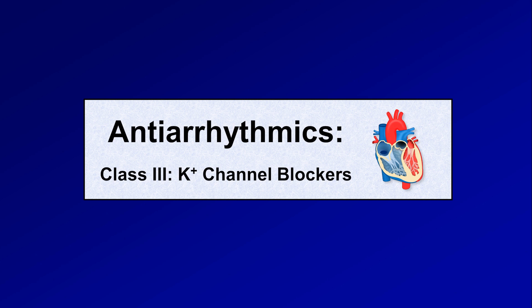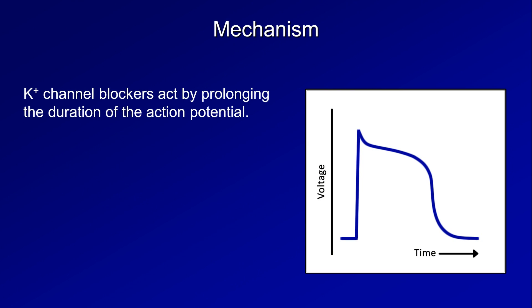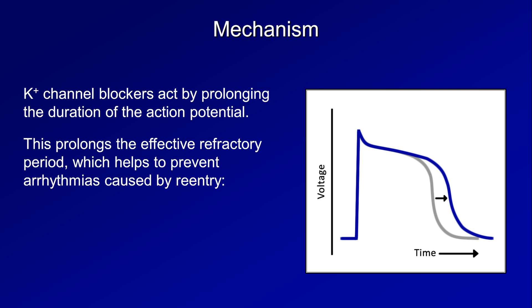This is video 4 on antiarrhythmics, and the topic is the class 3 drugs, potassium channel blockers. Potassium channel blockers act by prolonging the duration of the action potential. This necessarily prolongs the effective refractory period, which is really helpful at preventing those arrhythmias caused by reentry, particularly reentrant rhythms that are not dependent on the AV node, where beta blockers and calcium channel blockers would also be effective.